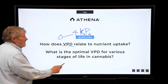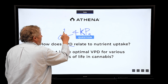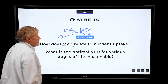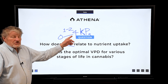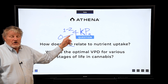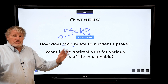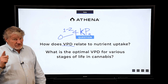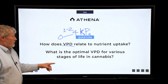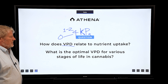Normally the optimums are about one to two in this range. Our plants in the field see four kilopascals all the time around here and they grow just fine, provided they're well watered. So what's the optimal VPD?